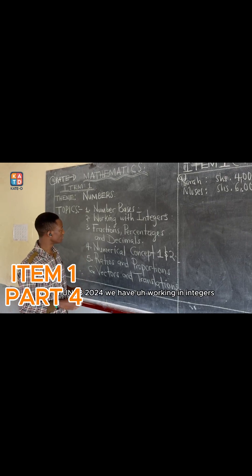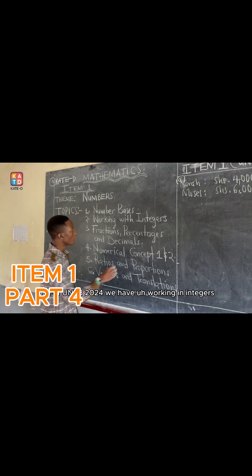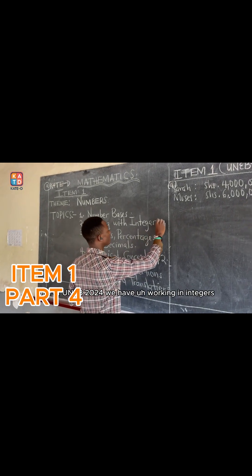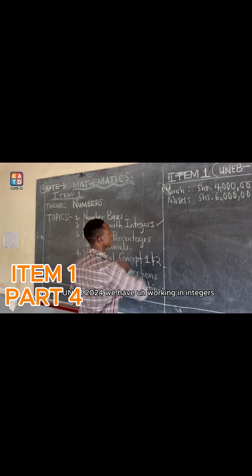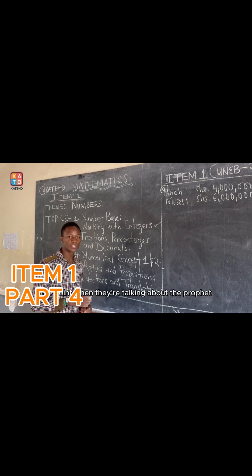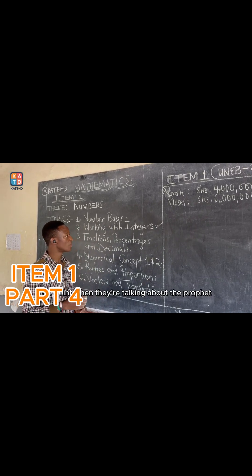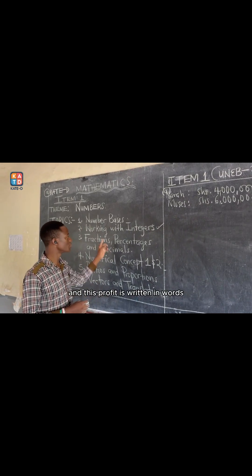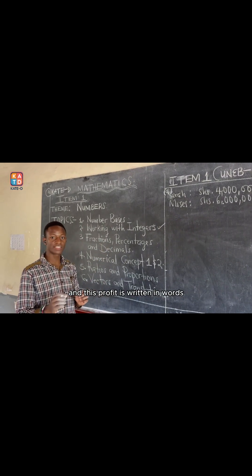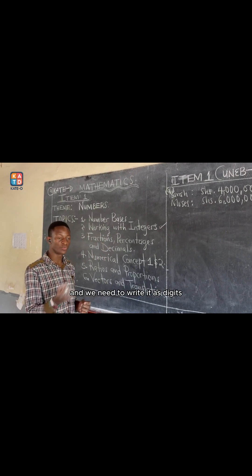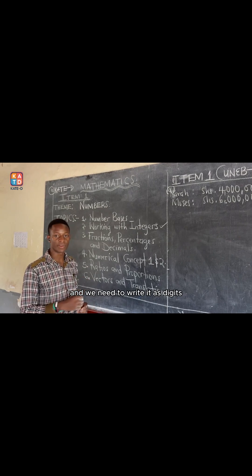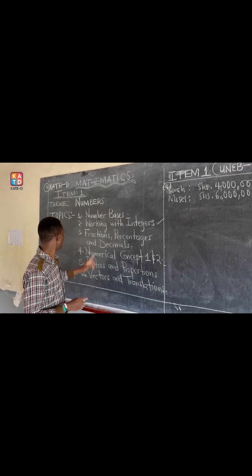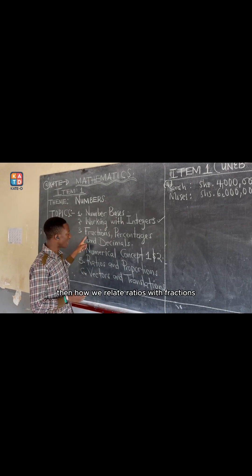Item 1: we have working with integers. The point when they are thinking about their profit, and this profit is written in words, and you need to write it as digits.